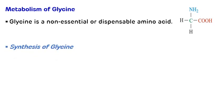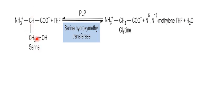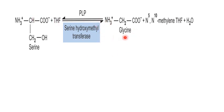Glycine is synthesized from serine by removal of the hydroxymethyl group from the side chain of serine. In the presence of tetrahydrofolate (THF), the enzyme serine hydroxymethyl transferase — which requires pyridoxal phosphate — removes the hydroxymethyl group from serine, converting it to glycine. The methylene group is transferred to THF, forming N5,N10-methylene tetrahydrofolate, and the hydroxyl becomes water. This is a reversible reaction, so glycine can also be converted back to serine.